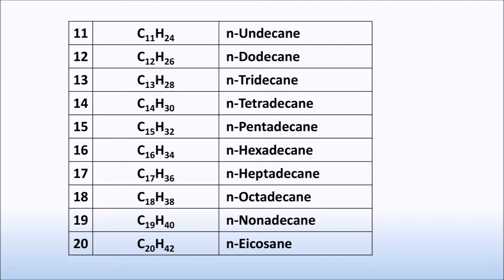11th is undecane, 12th is dodecane, 13th is tridecane, 14th is tetradecane, 15th is pentadecane, 16th is hexadecane, 17th is heptadecane, 18th is octadecane, 19th is nonadecane, and the next round figure, 20, is eicosane.